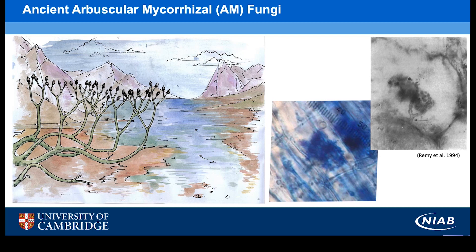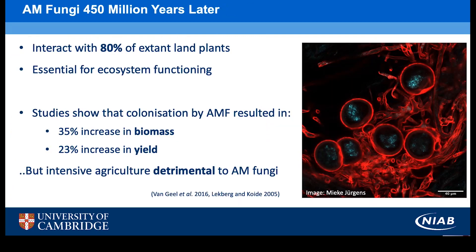On the right here you can see the remarkable similarities between a 450 million year old fossil and a two year old stained slide of a vetch plant. 450 million years later, the arbuscular mycorrhizal fungi are still interacting with 80% of land plants and they're essential for ecosystem functioning — grasslands, forests and indeed agriculture. Meta-analyses have shown that colonisation by AM fungi has resulted in a 35% increase in plant biomass and a 23% increase in crop yield.